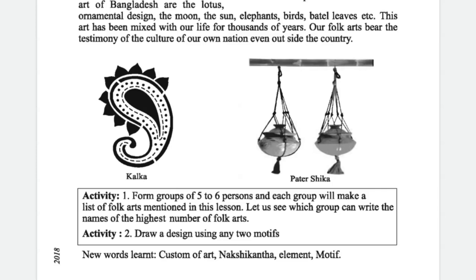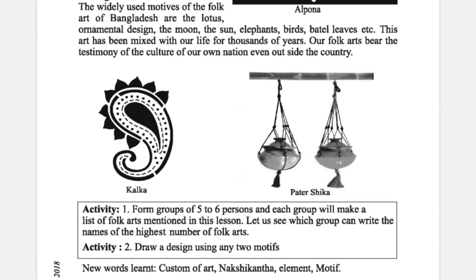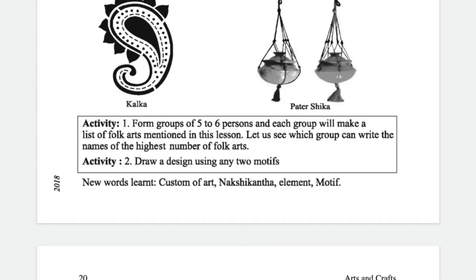In this lesson we have activity one: Let us see which group can write the name of the highest number of folk arts. And activity two: Draw a design using any two motifs. I will give you homework — lesson two and three, activity number two: Draw a design using any two motifs. I can suggest two motifs — it could be Kolka, it could be a lotus. So with lotus and Kolka, make a beautiful alpona design.